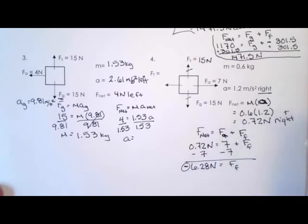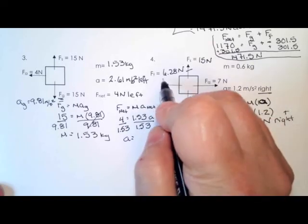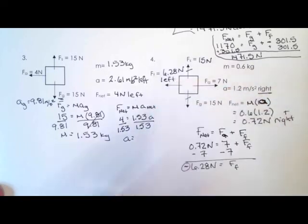But really, what is that negative telling us? It's telling us not that it's a number less than zero, it's actually telling us that it's the opposite direction from the net force. So force of friction is going to be 6.28 newtons, and not to the right, it's going to be to the left. So that should pretty much take care of most issues that you're going to have when you're trying to do these free body diagrams and taking them one step further to figure out what the acceleration is going to be in that particular situation.